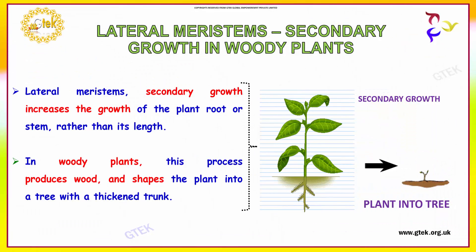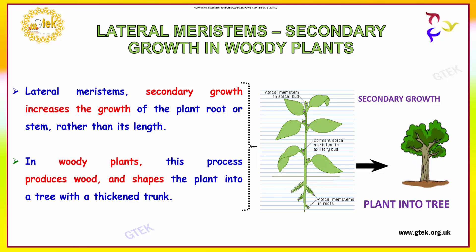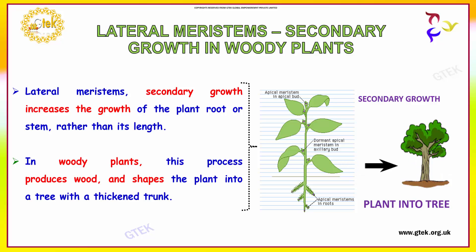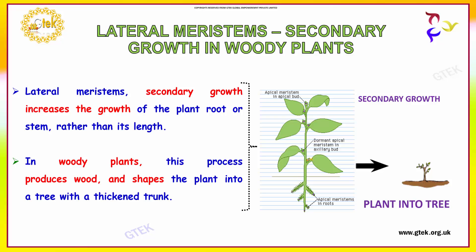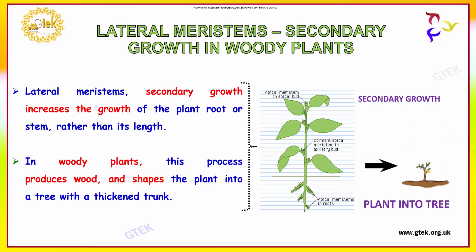Let us see about lateral meristems. Lateral meristems' secondary growth increases the width of the plant's root or stem rather than its length. In woody plants, this process produces wood and shapes the plant into a tree with a thickened trunk. You can see it here — the thickened trunk of the tree. From the plant, the tree is produced through secondary growth.